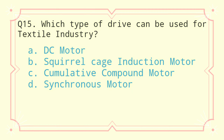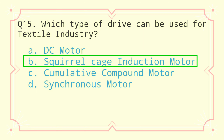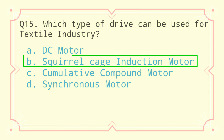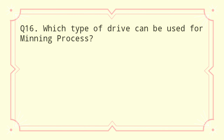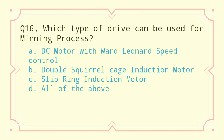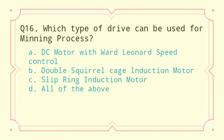Question 15: Which type of drive can be used for textile industry? a) DC motor, b) squirrel cage induction motor, c) cumulative compound motor, d) synchronous motor. The correct answer is squirrel cage induction motor.